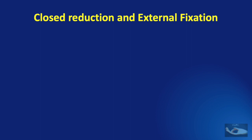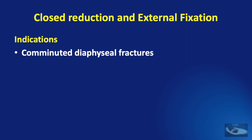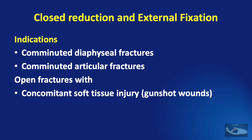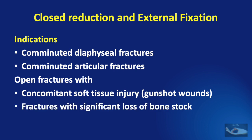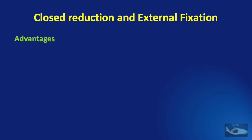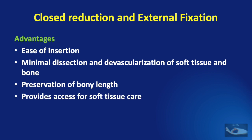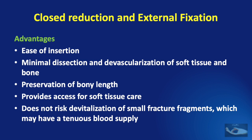The option of closed reduction and external fixation is indicated in comminuted diaphysial fractures, comminuted articular fractures, open fractures with concomitant soft tissue injuries like gunshot wounds or high-speed injuries like road traffic accidents, and in fractures with significant loss of bone stock. The advantages are ease of insertion, minimal dissection required, minimized devascularization of soft tissue and bone, preservation of bony length, access for soft tissue care and even skin flap covers, and no risk of devitalization of small fracture fragments with a tenuous blood supply.